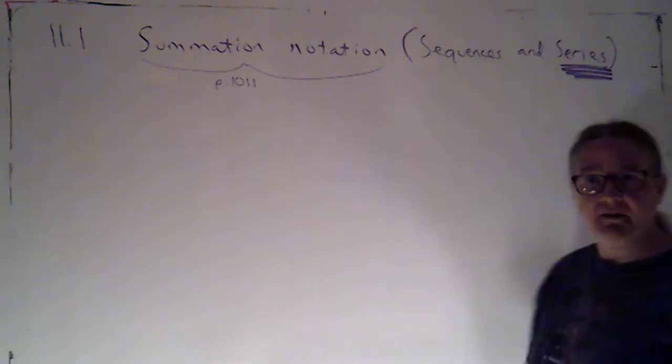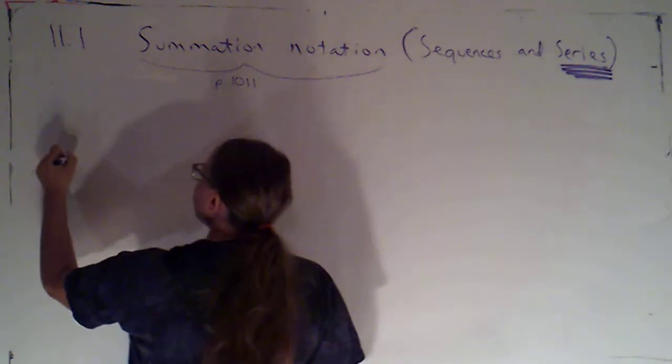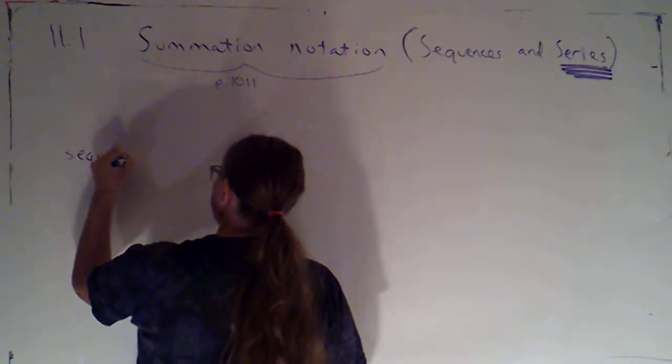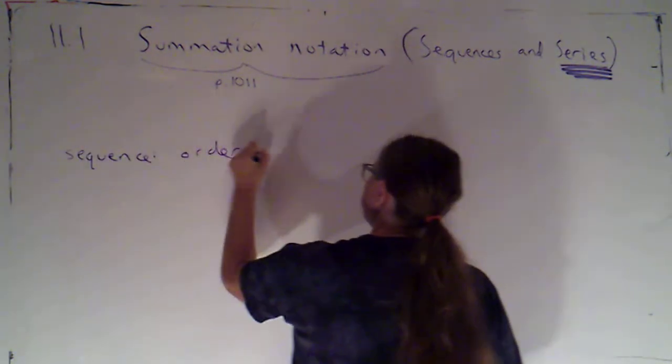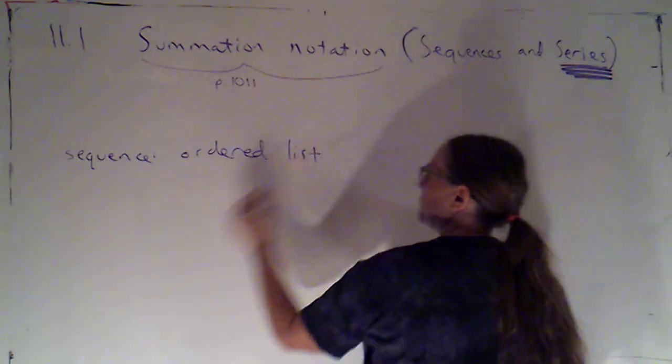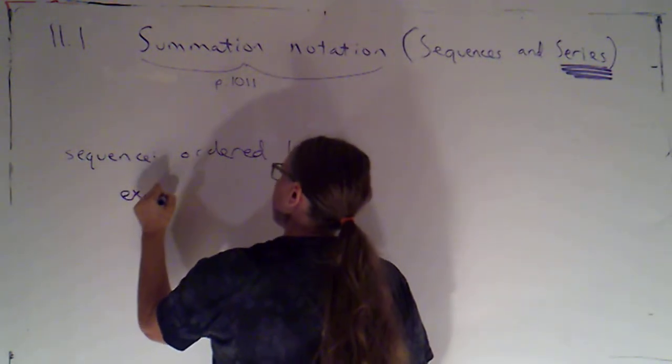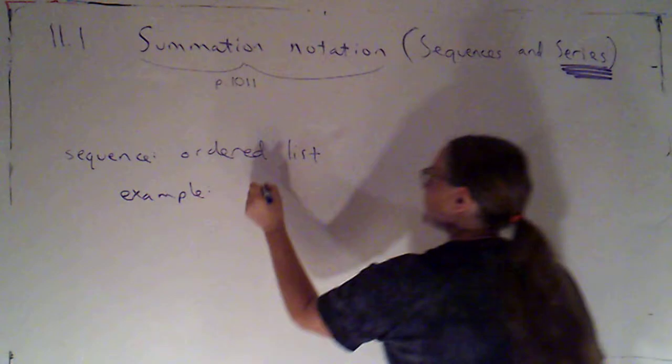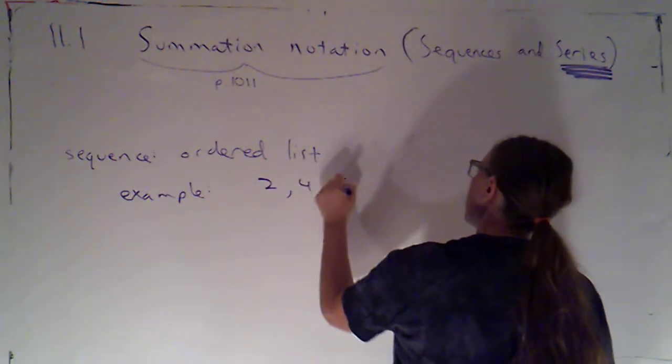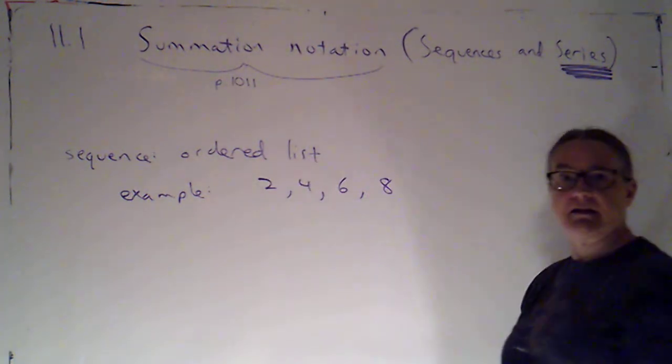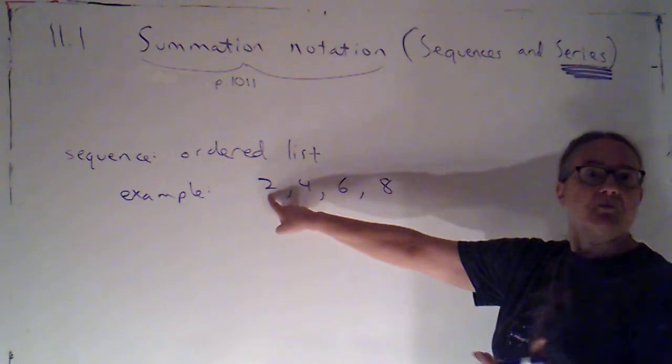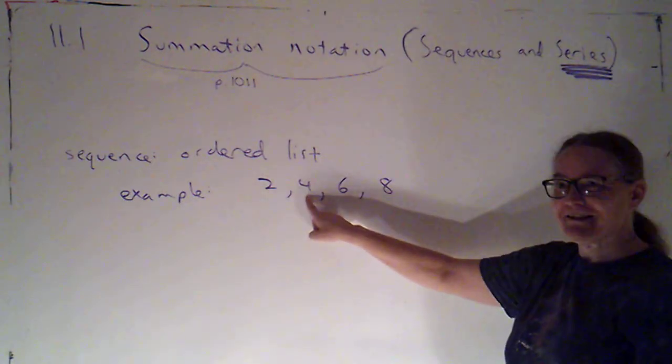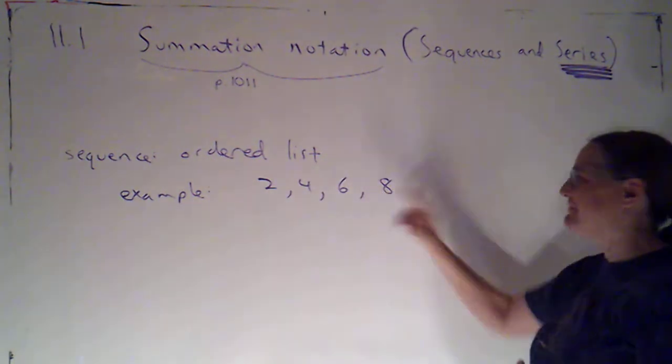Now let's put this in context. Let's get some definitions down. A sequence is just an ordered list. So as an example, I could have the sequence 2, 4, 6, 8. The first number on my list is 2, the second is 4, the third is 6, and the fourth is 8.